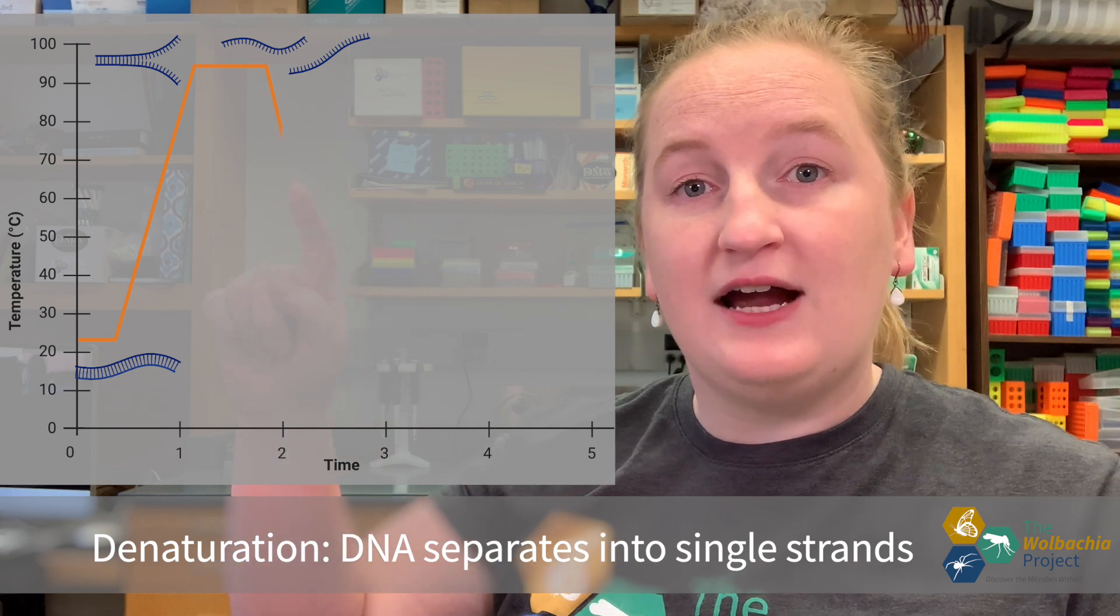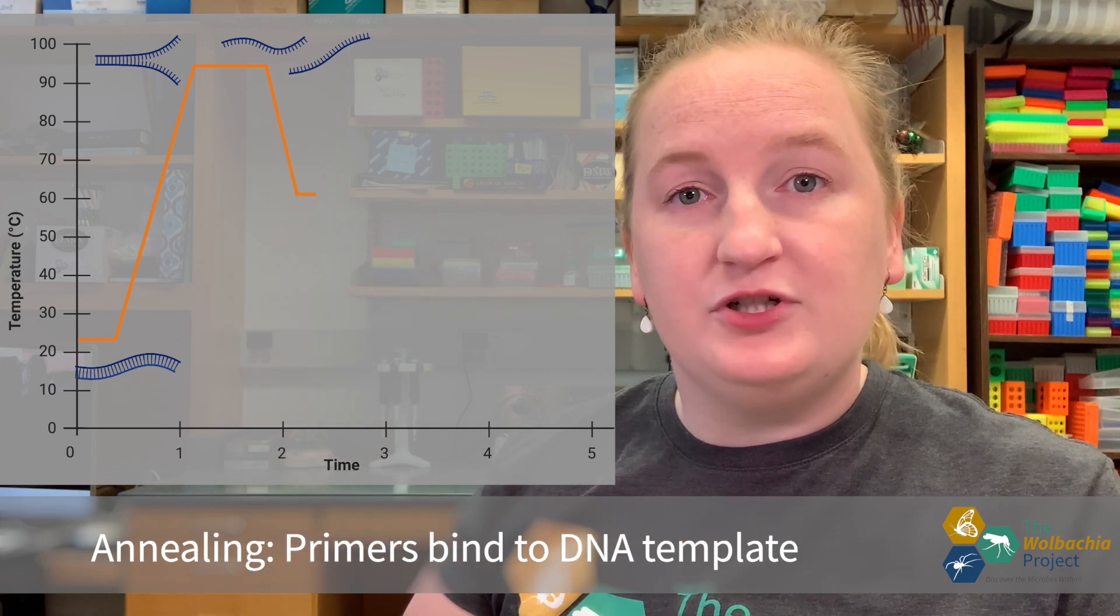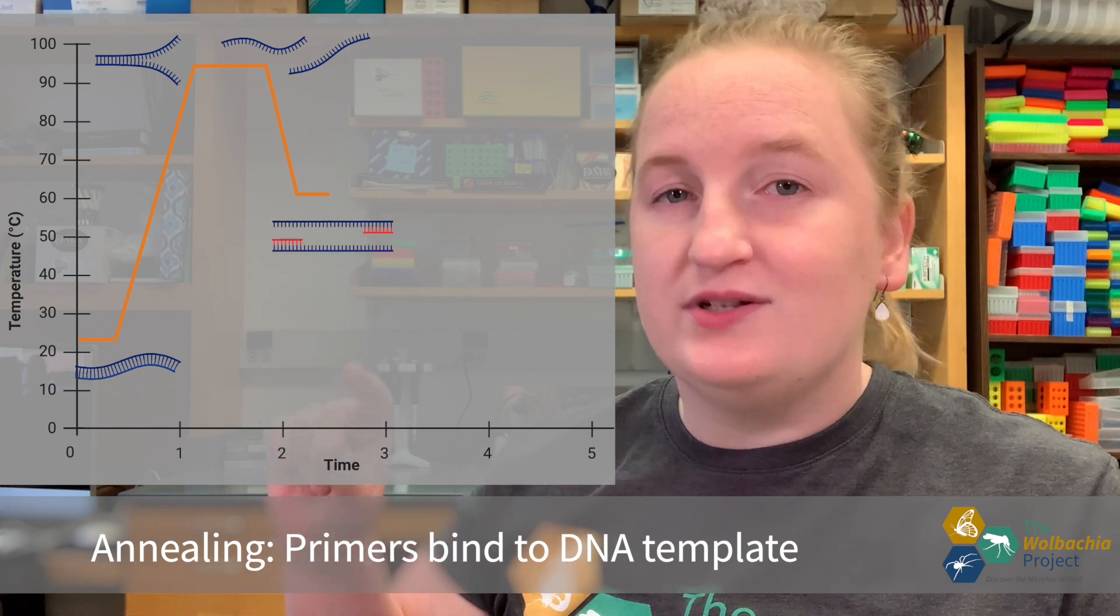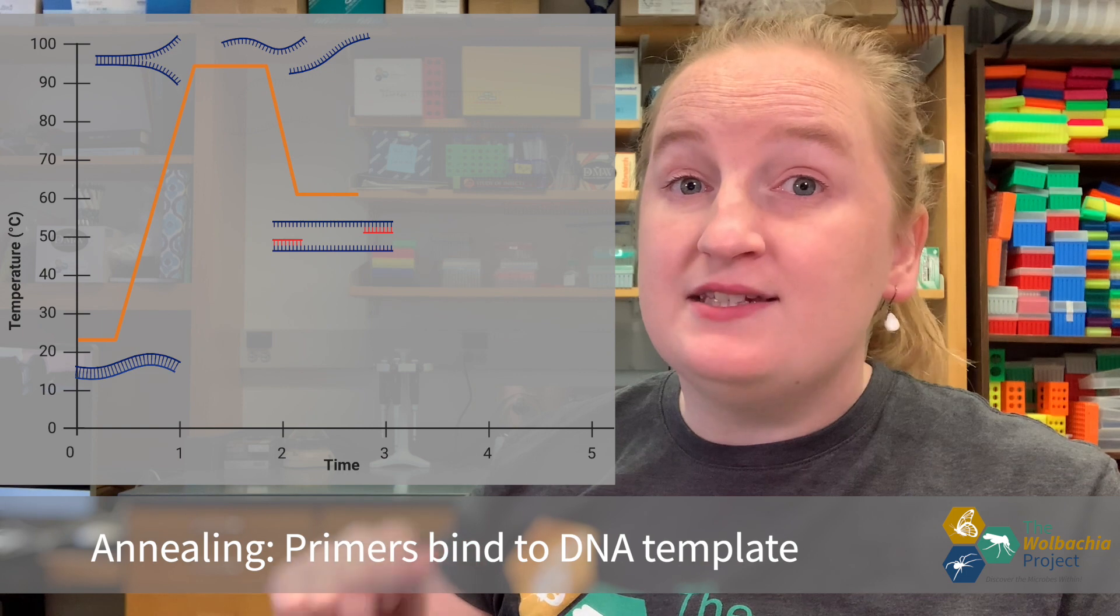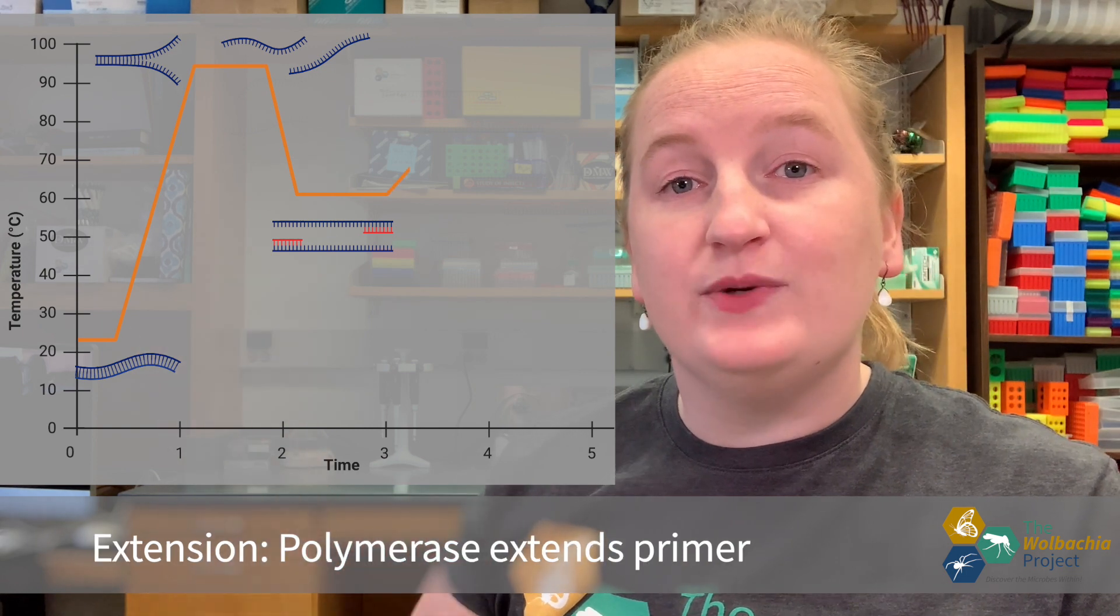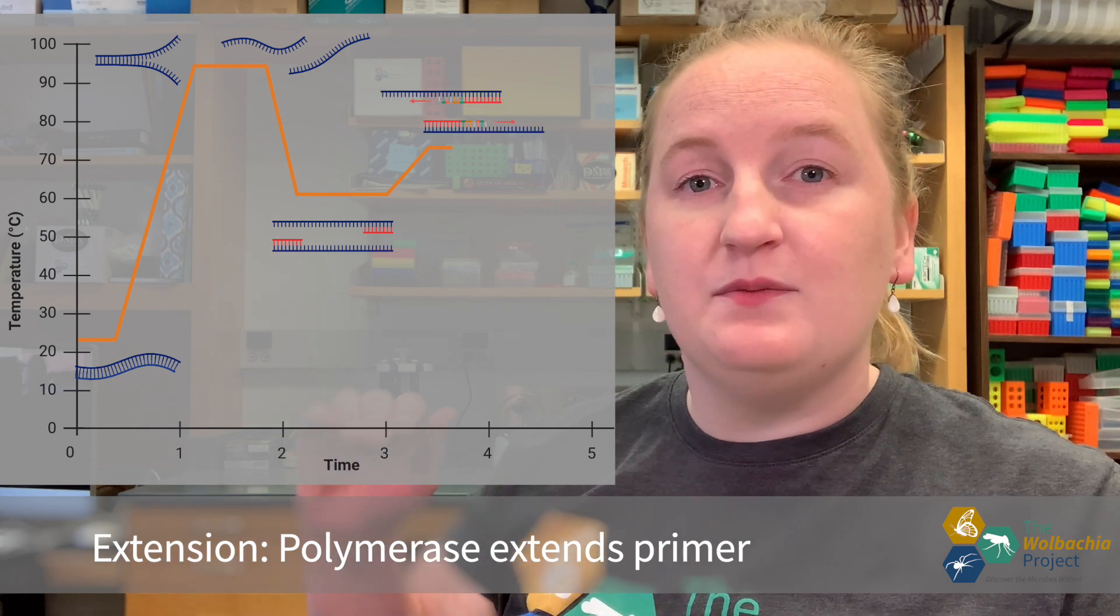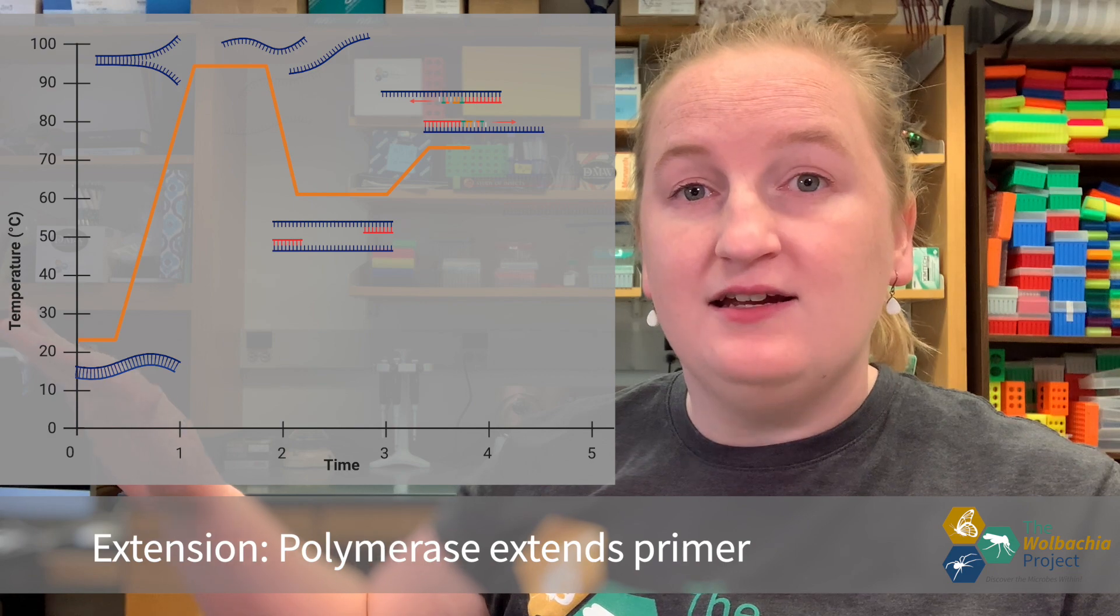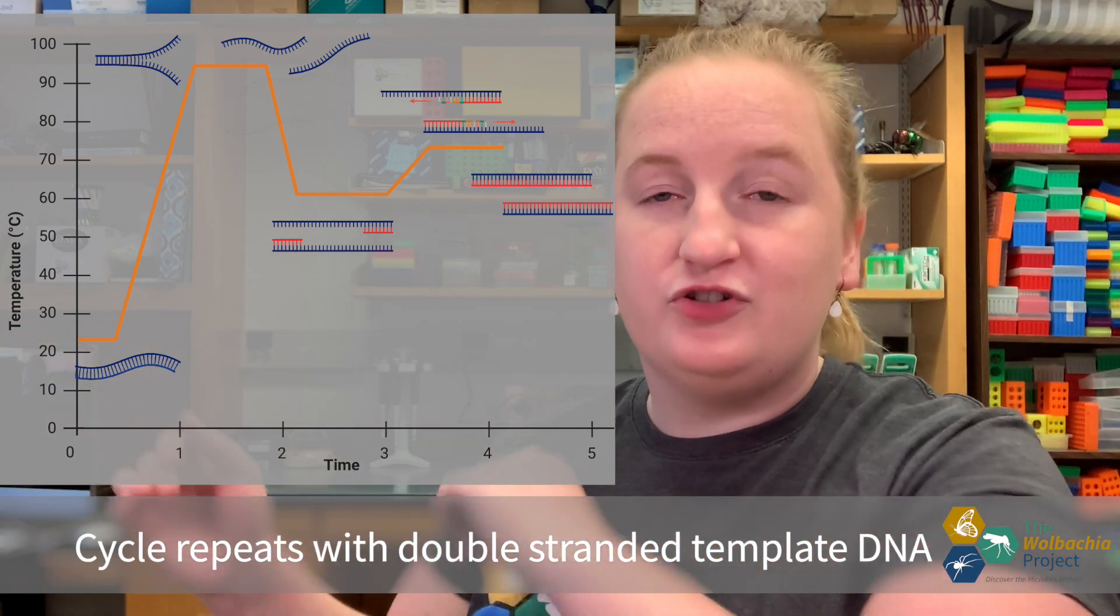Then, we'll cool our entire reaction off to the annealing temperature. The annealing temperature is where primers bind or sit down on the DNA. That annealing temperature is specific to the primers that you have. Then, we'll heat our mixture back up again to extension, where that special tac polymerase is able to replicate the DNA and bring it from two single strand copies to two double strand copies.